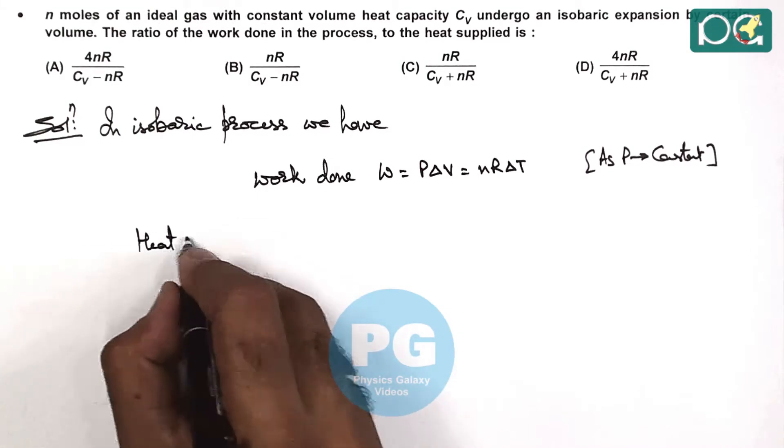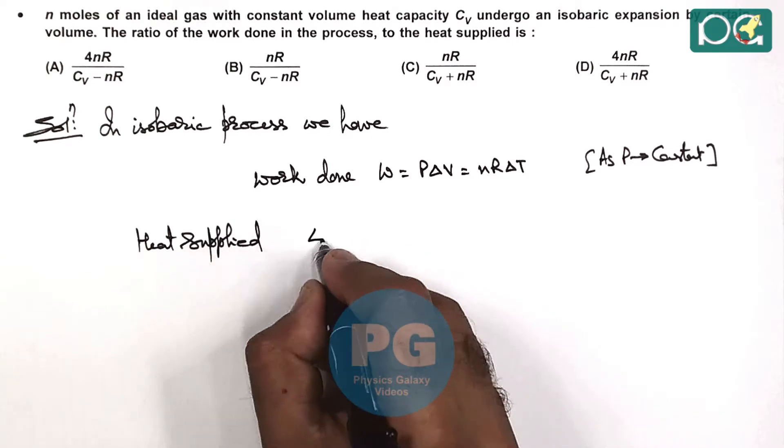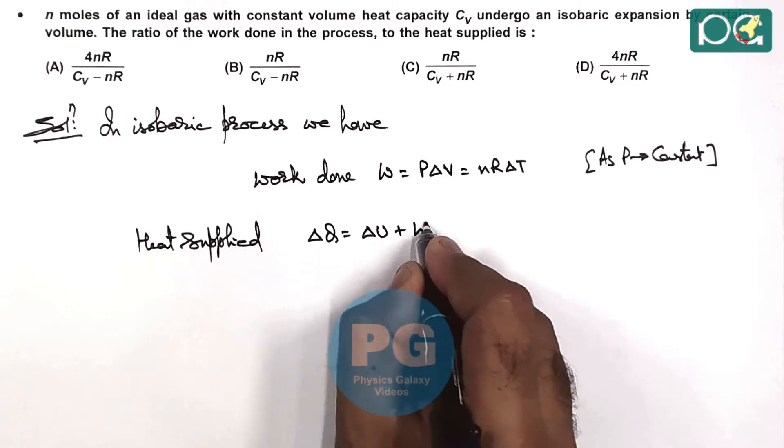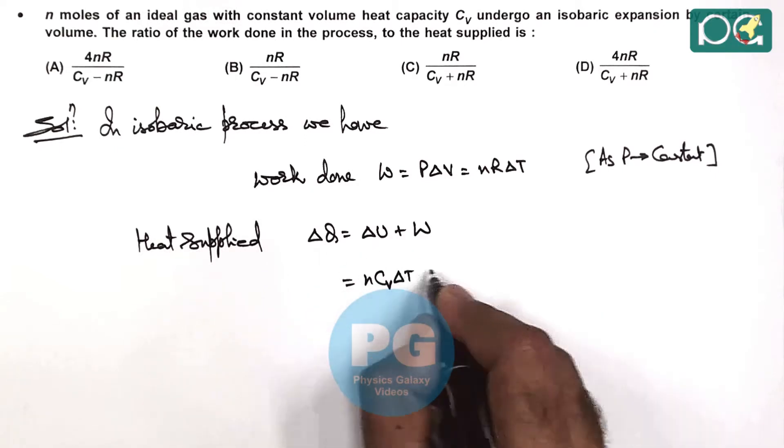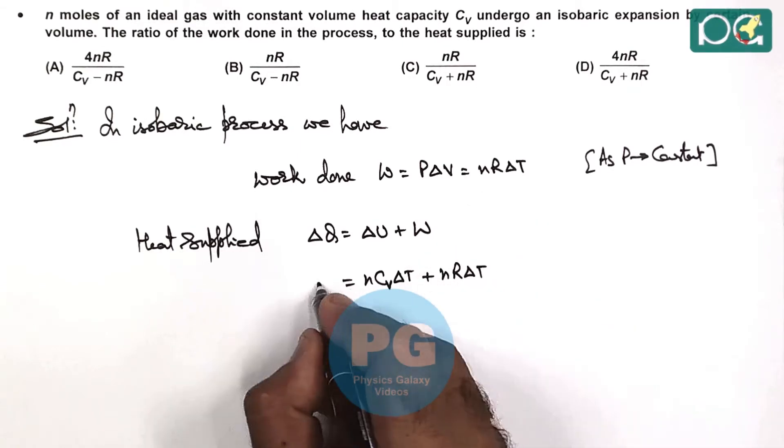The heat supplied can be calculated using the first law of thermodynamics as ∆Q = ∆U + W. ∆U is nCv∆T and work done is nR∆T.